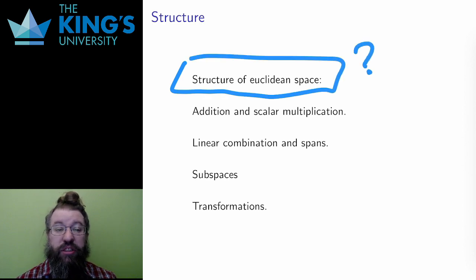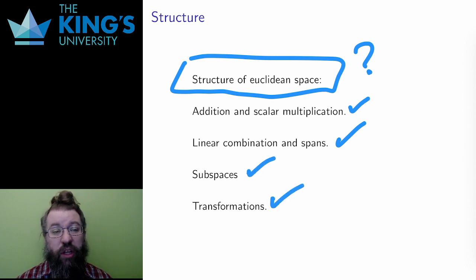I found addition of vectors and scalar multiplication. I found linear combinations of vectors and spans. I found linear independence. I found subspaces. I found transformations. And these are not the only structures, but these are the ones that I care about for the moment.